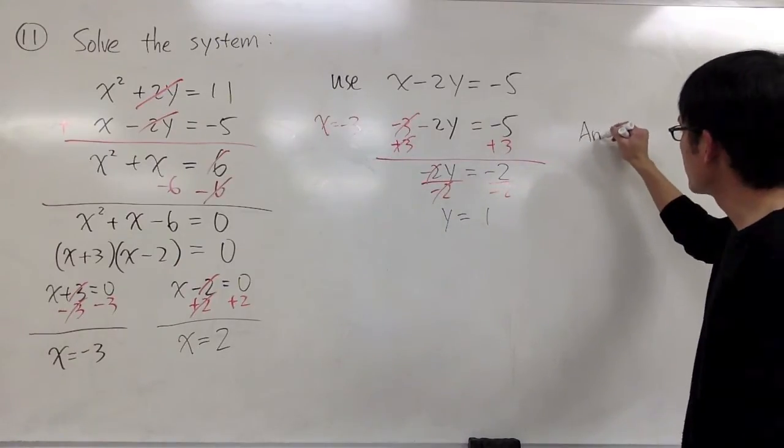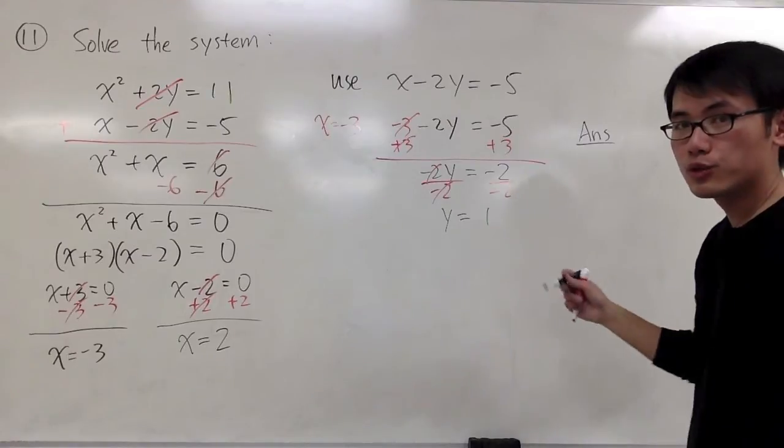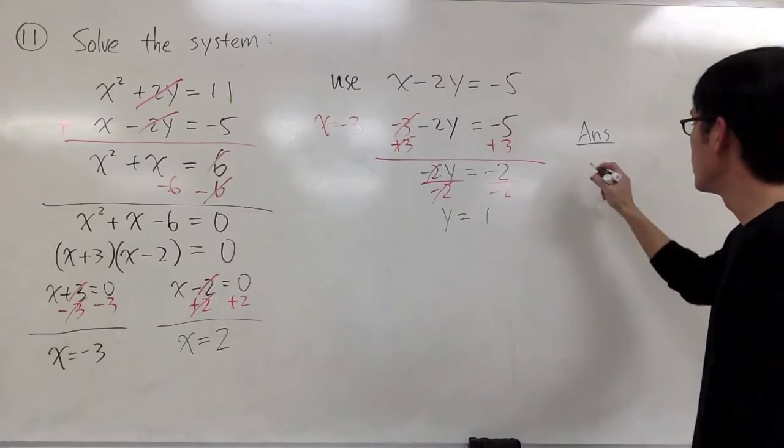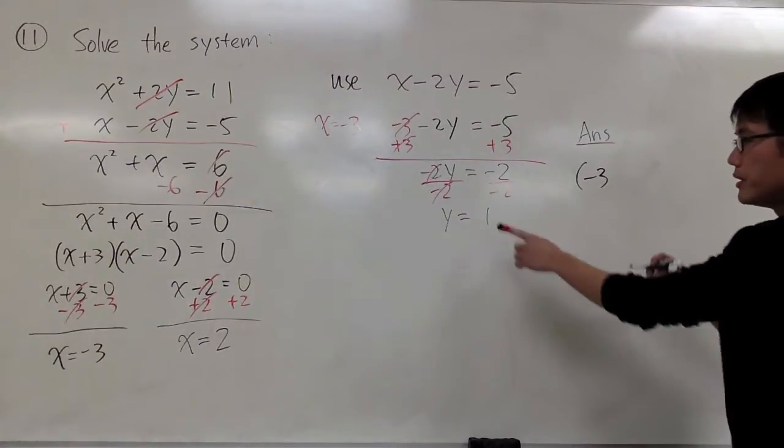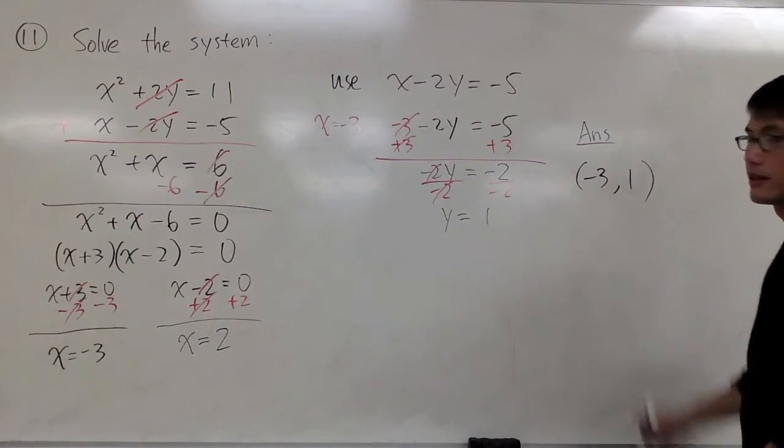So the first solution is when x is -3 and y = 1. So I'll just write down the answers right here. We'll just write this down as an ordered pair. When x is -3 and y will be positive 1. My first answer.